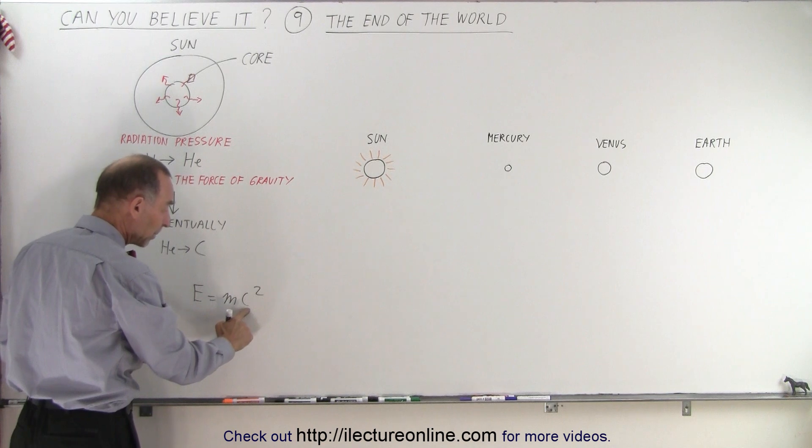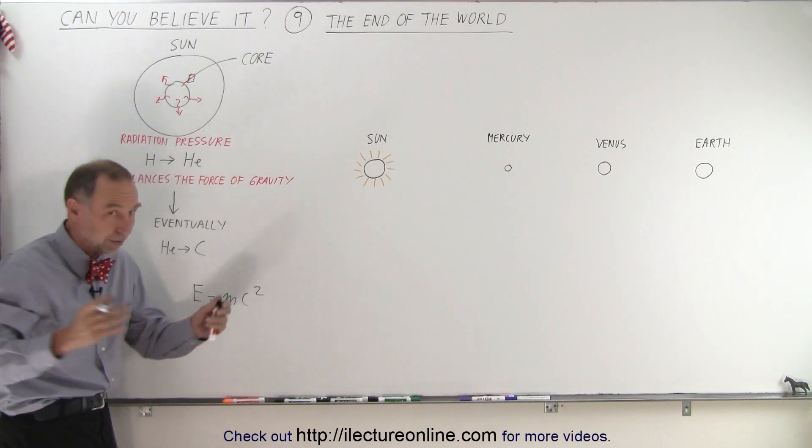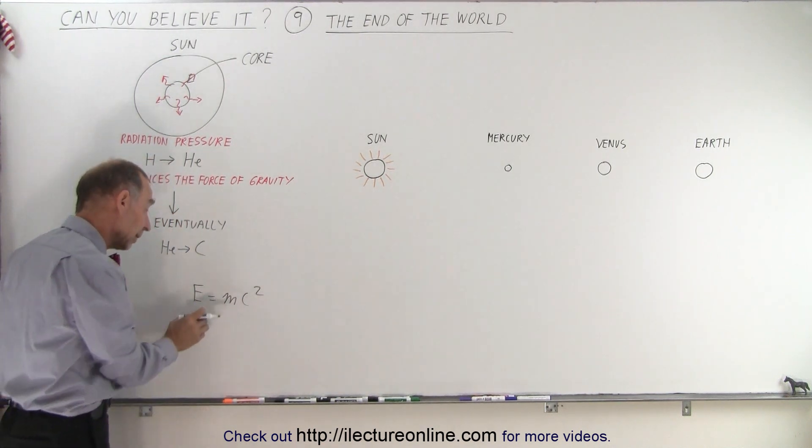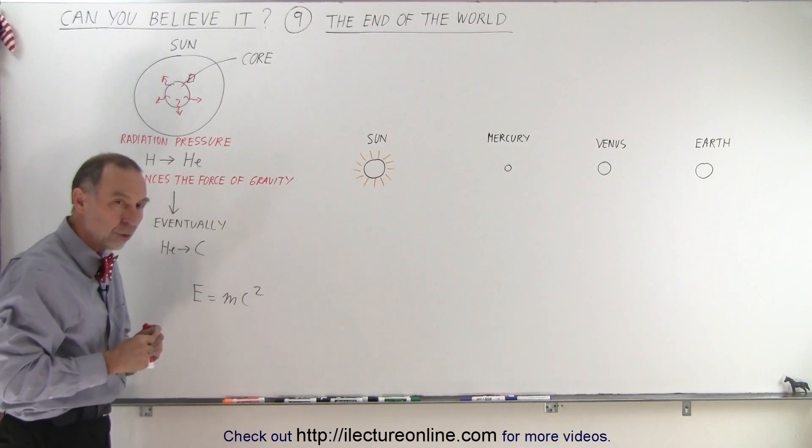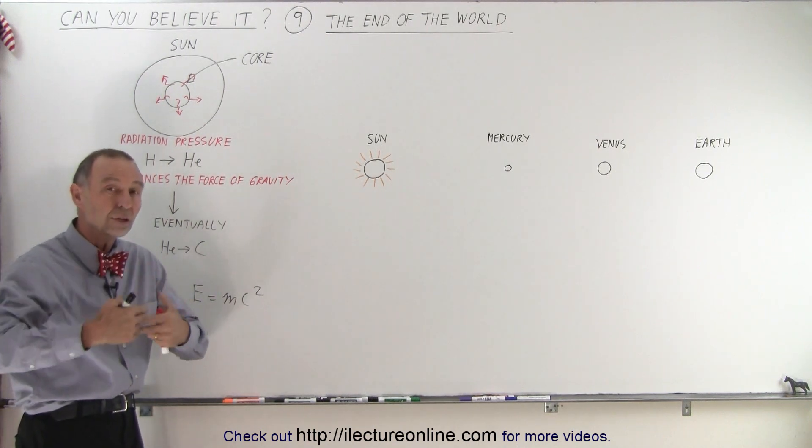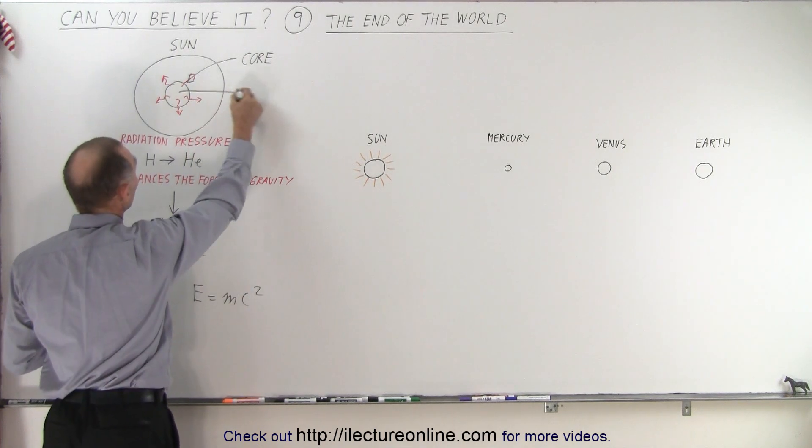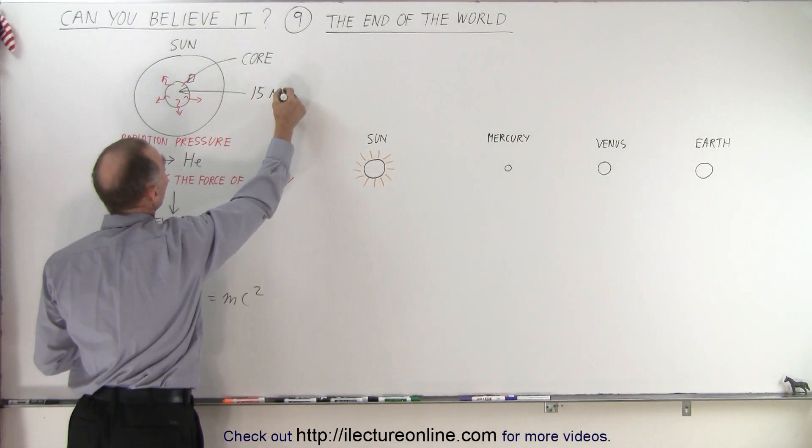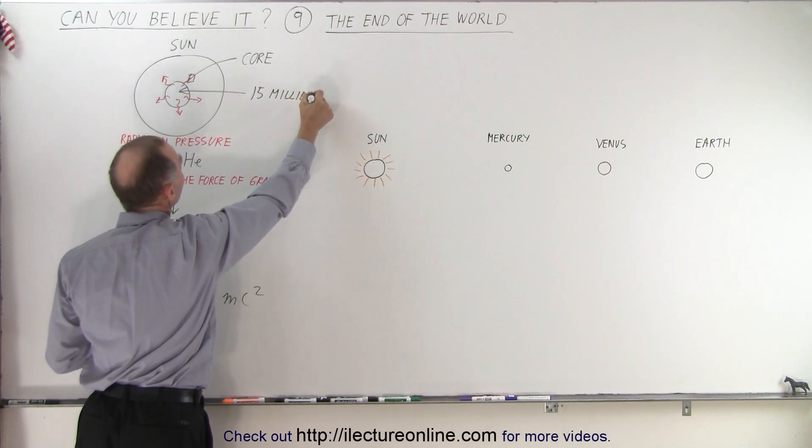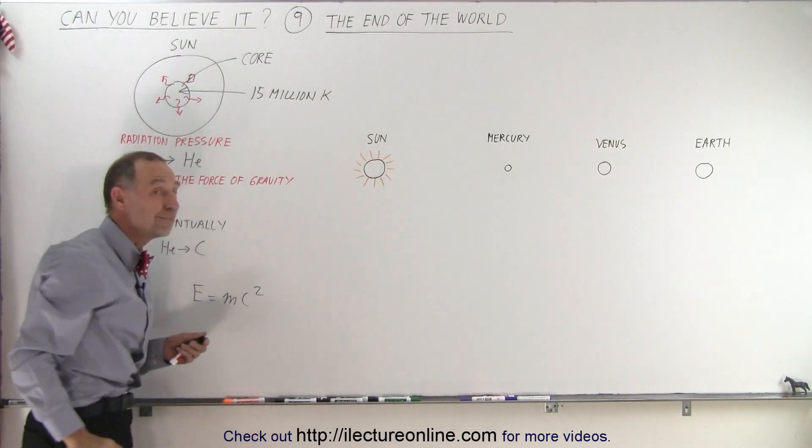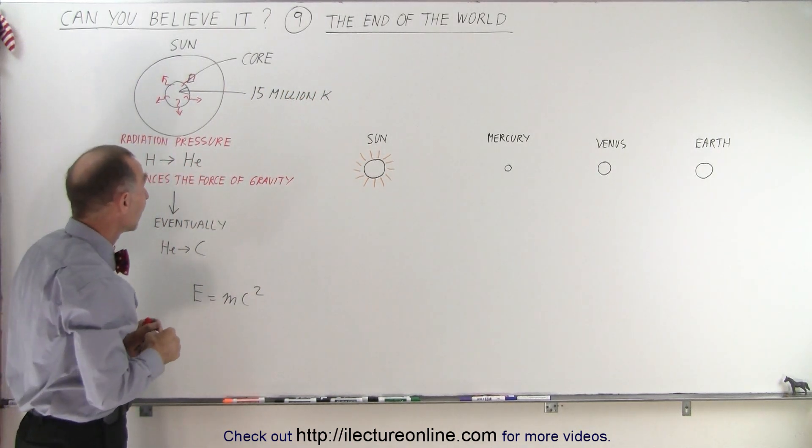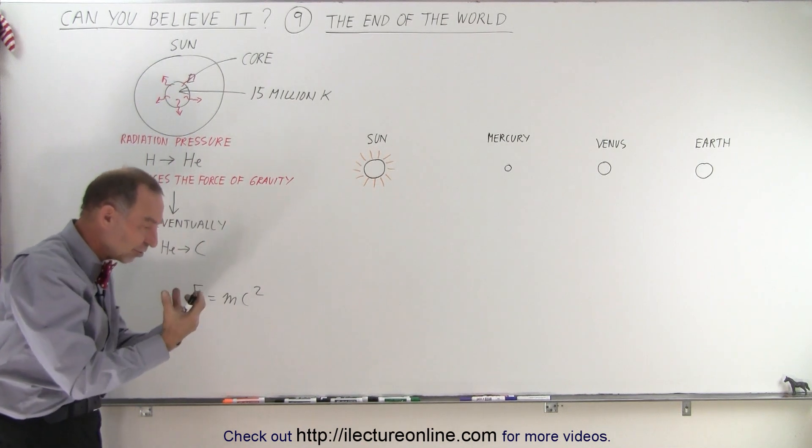So a small amount of mass multiplied by the speed of light squared, and the speed of light is a very big number, well that produces a lot of energy. So matter is being turned into energy in the core of the sun. Now the temperature in the core of the sun is about 15 million degrees kelvin, about 30 million Fahrenheit. And so it's very hot in there, a lot of energy is produced.